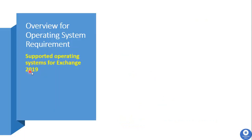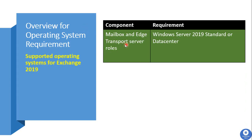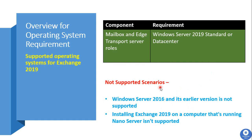Now we will see operating system requirements for installing Microsoft Exchange Server 2019. We can install Exchange Server 2019 only on Windows Server 2019 Standard or Datacenter edition — this is the only supported operating system. Exchange 2019 cannot be installed on Windows Server 2016 or any earlier version, and installing Exchange 2019 on a computer running Nano Server is also not supported.